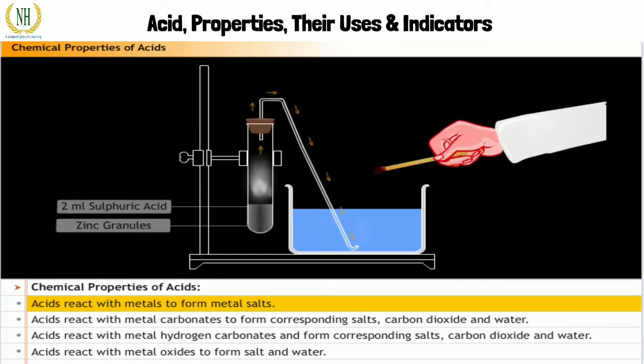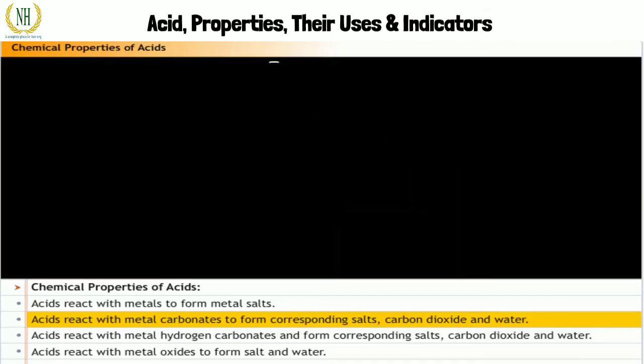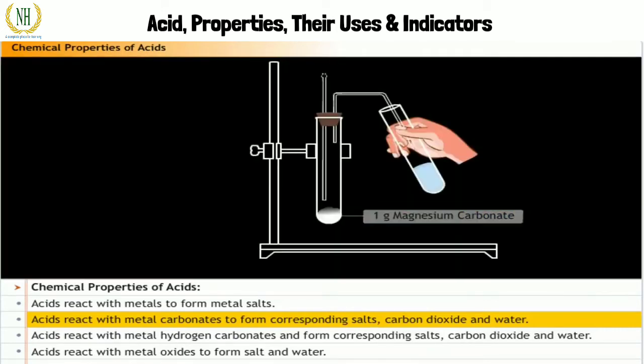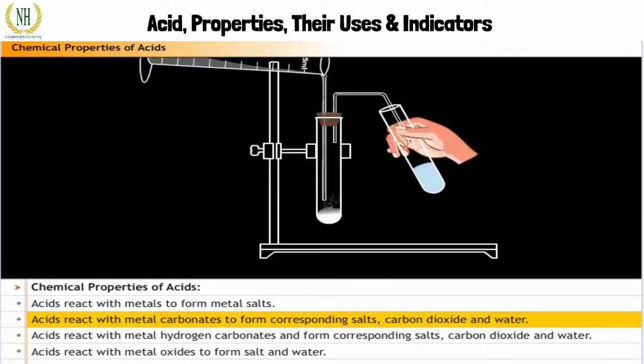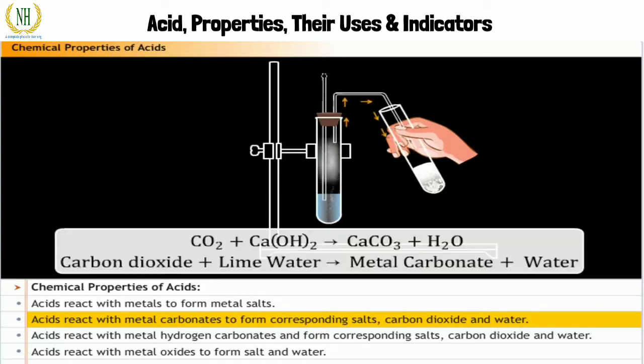Acids react with metal carbonates to form corresponding salts, carbon dioxide, and water. Try this experiment: take one gram of magnesium carbonate. Now pour two ml of hydrochloric acid into the test tube. You will observe that a gas evolves. Pass this gas through freshly prepared calcium hydroxide solution, also known as lime water. Lime water turns milky, proving that the gas is carbon dioxide. The precipitate formed in this process is calcium carbonate.